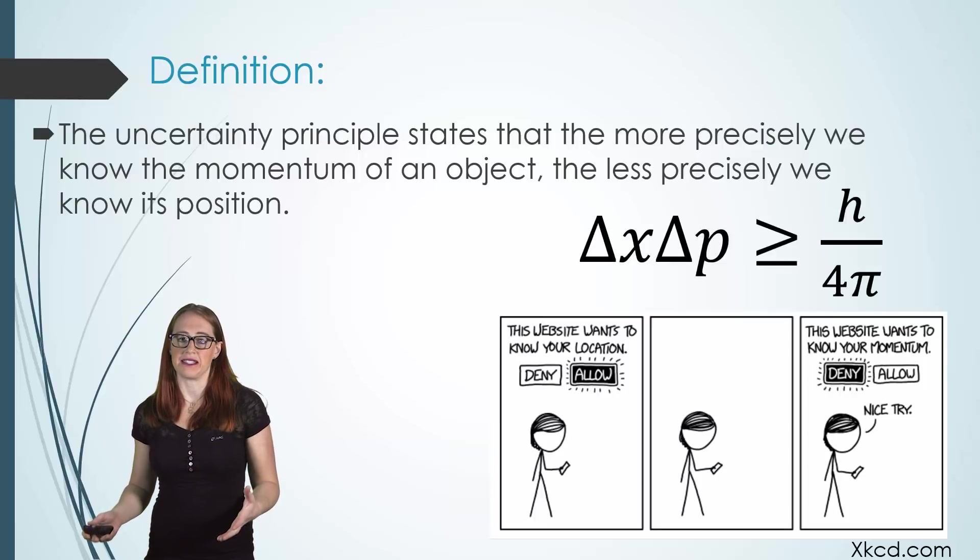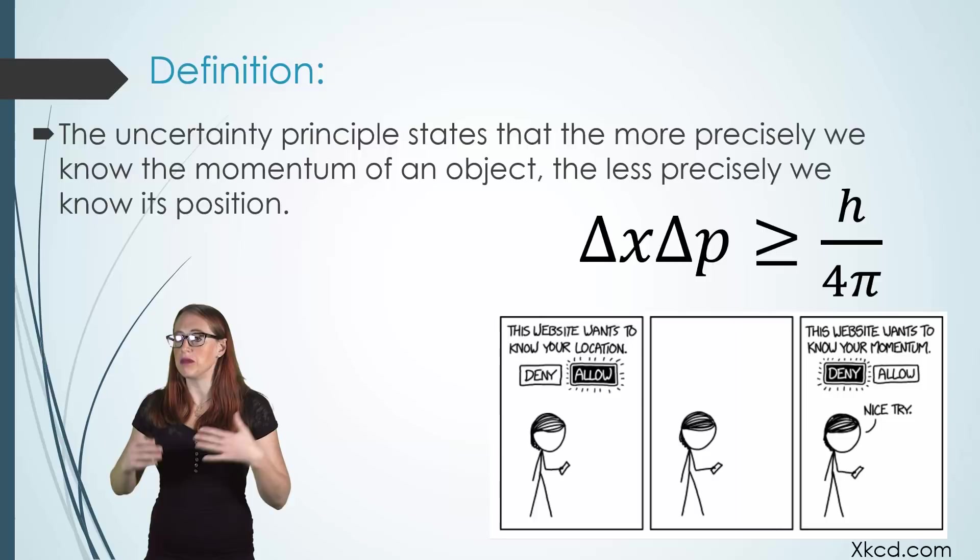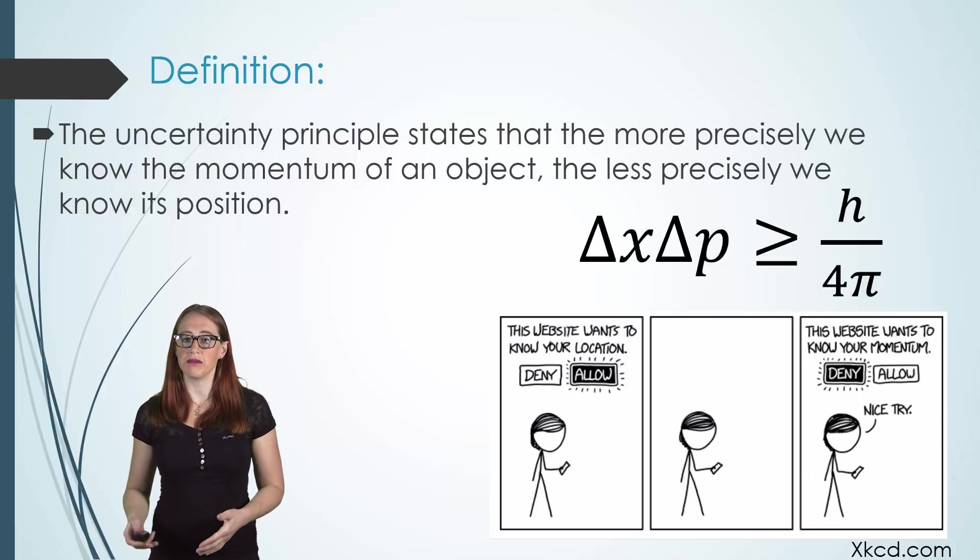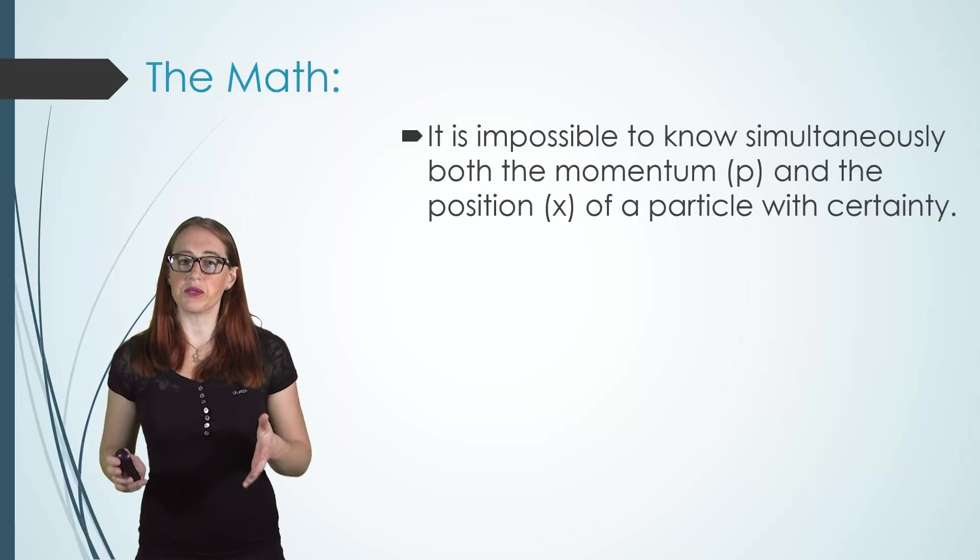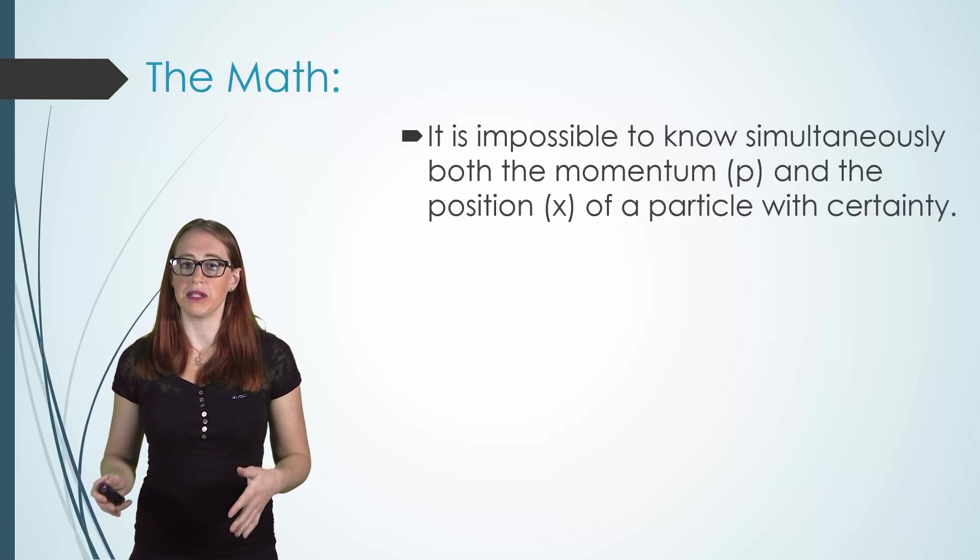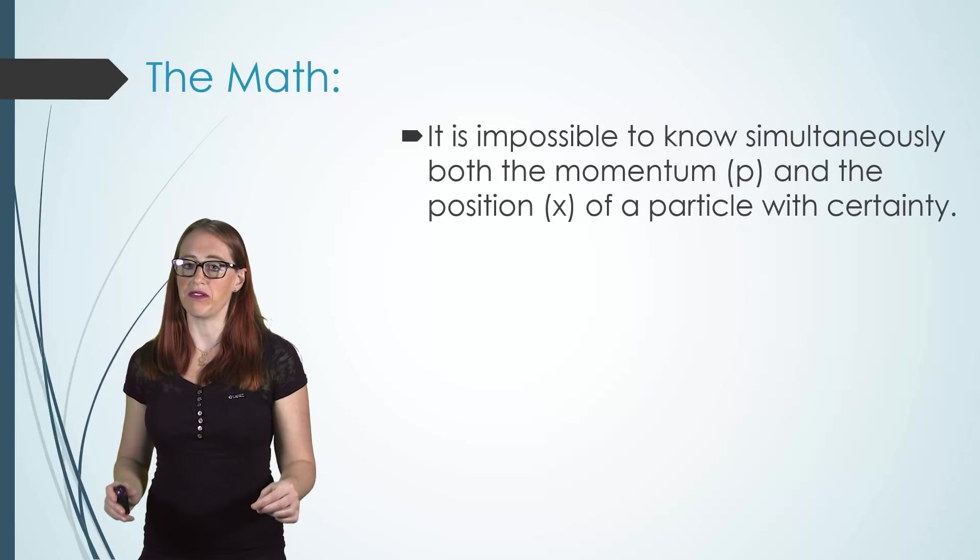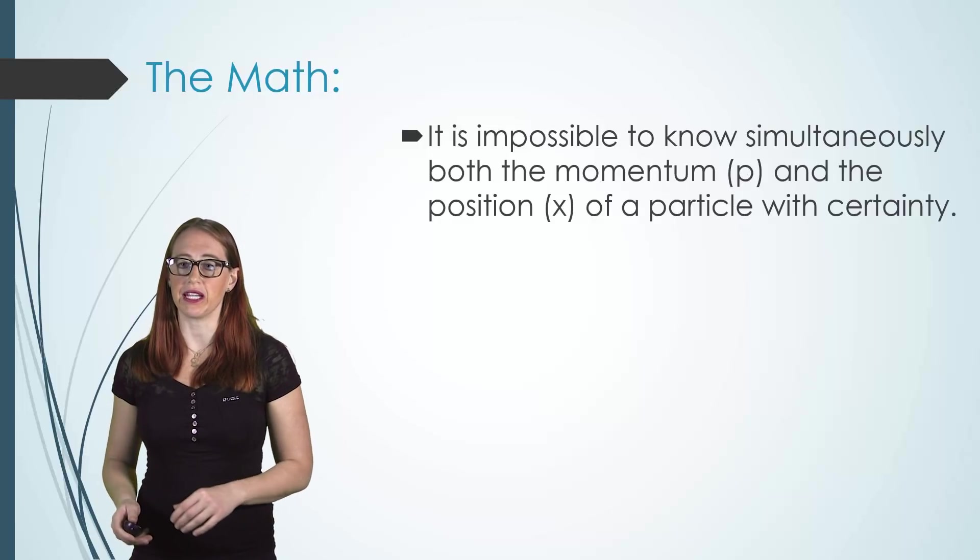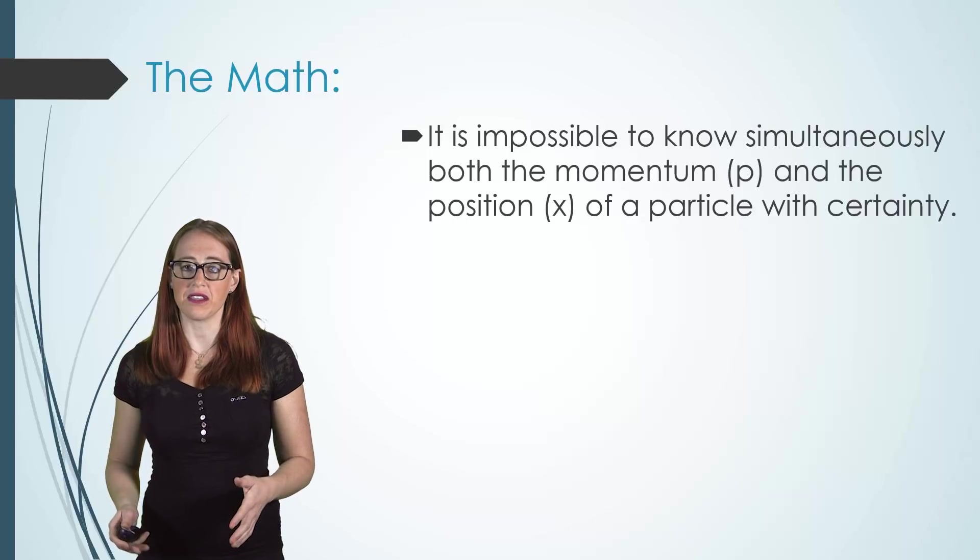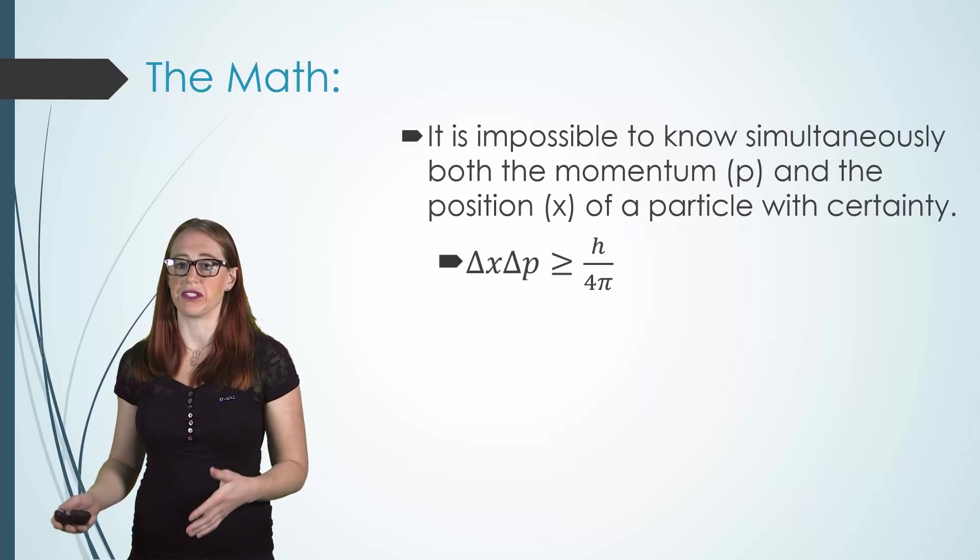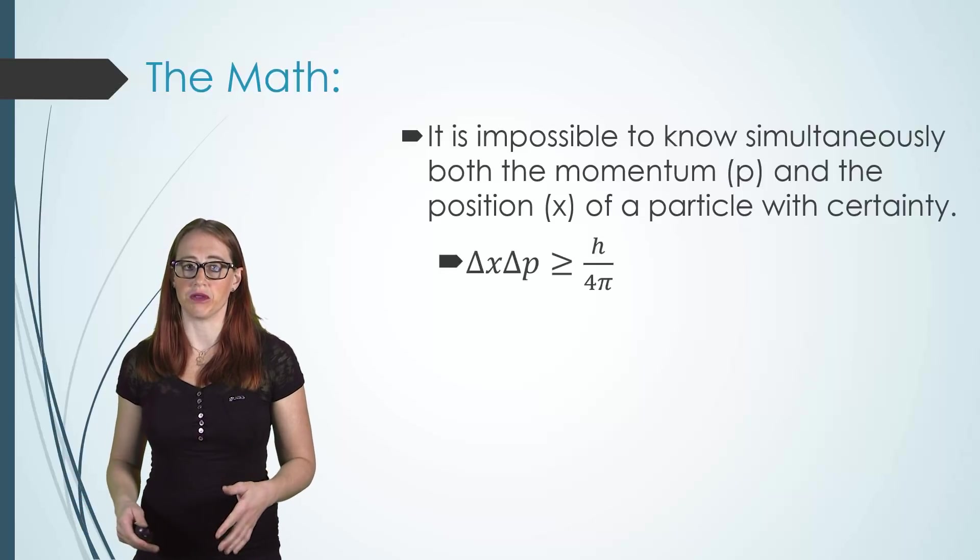Now let's add to this by adding in what our minimum limit for our uncertainties are. Our uncertainty in momentum multiplied by our uncertainty in position must be greater than h over 4π. As we just learned, we can't know both the momentum and position with exact certainty. It tells us that there is a theoretical limit that the momentum multiplied by position must be greater than, and that limit is h over 4π.